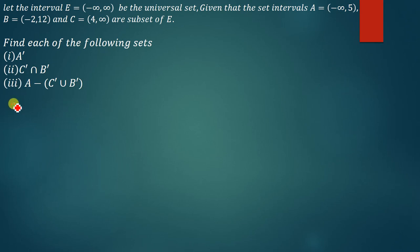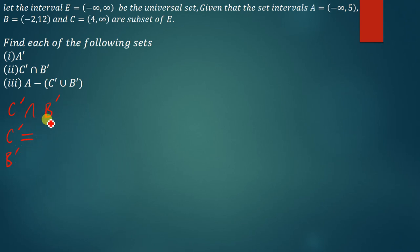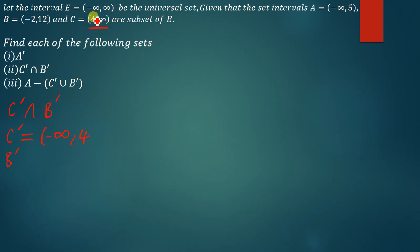The next one is C complement intersection B complement. First, we find C complement and B complement independently, then find the intersection. C itself is from 4 to positive infinity, so C complement goes from negative infinity up to 4. Since C is open at 4, meaning 4 is not part of set C, it becomes part of C complement — so we use a square bracket at 4.